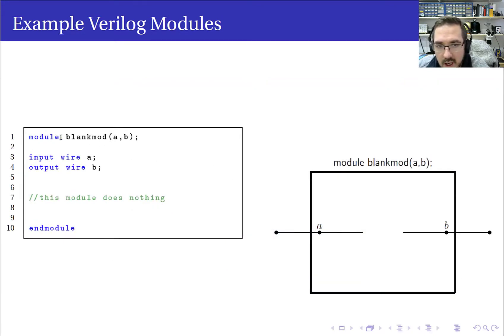So this one is called blank mod. Just like any other Verilog module, you have the keyword module, you have the name of the module, which in this case I've called blank mod. You have the port list, so A, B. A is an input wire and B is an output wire. If you like, we can represent this module as a box, and we have the input as A and then the output as B.